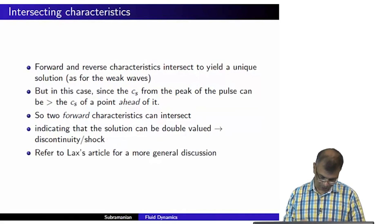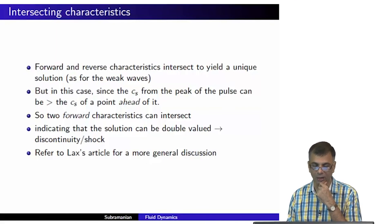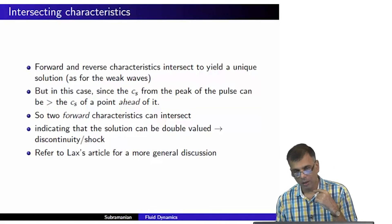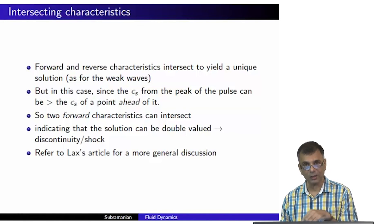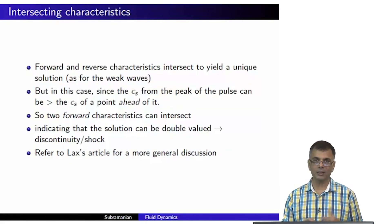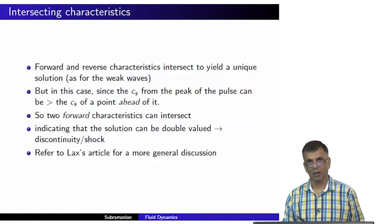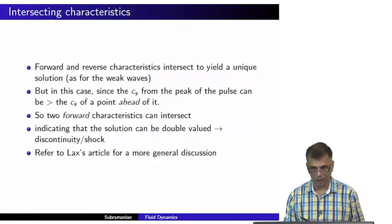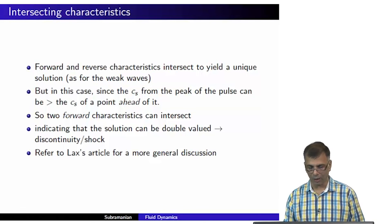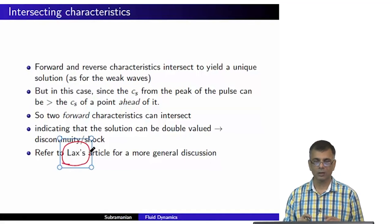There is an article by Lax that gives a more general discussion of this, which I urge you to read. For situations where disturbances are not small, two forward characteristics — not forward and backward — can intersect, leading to the mathematical problem of non-unique solutions. This essentially leads to the realization that such solutions can contain discontinuities, some of which are what we call shocks. We will talk more about shocks in the next segment.